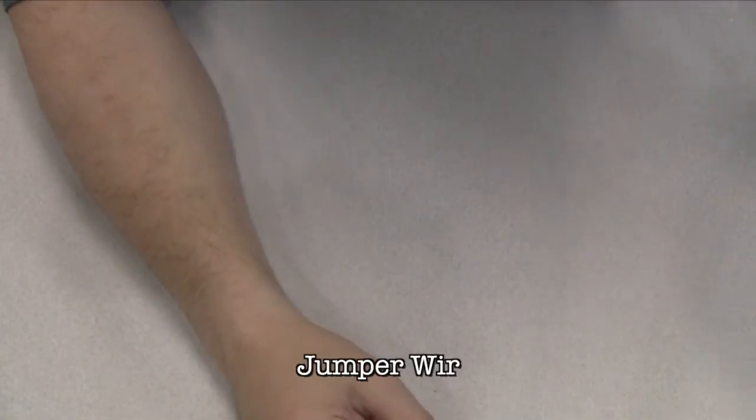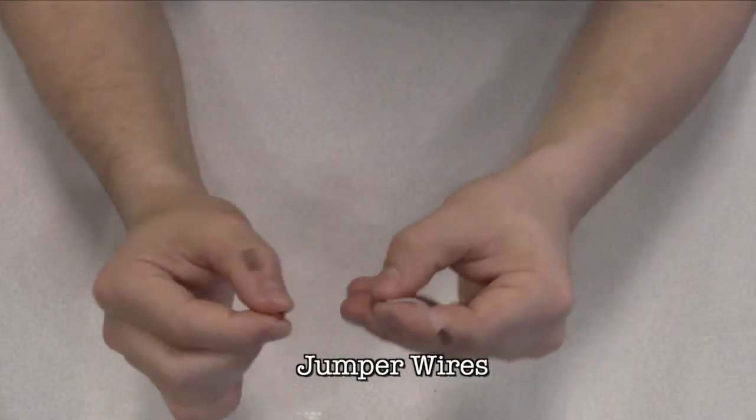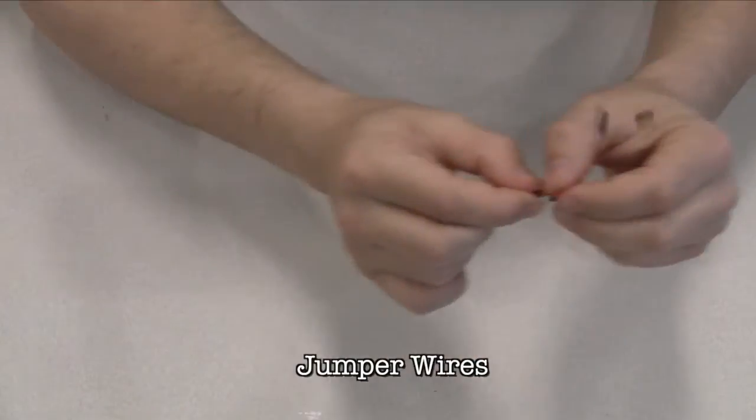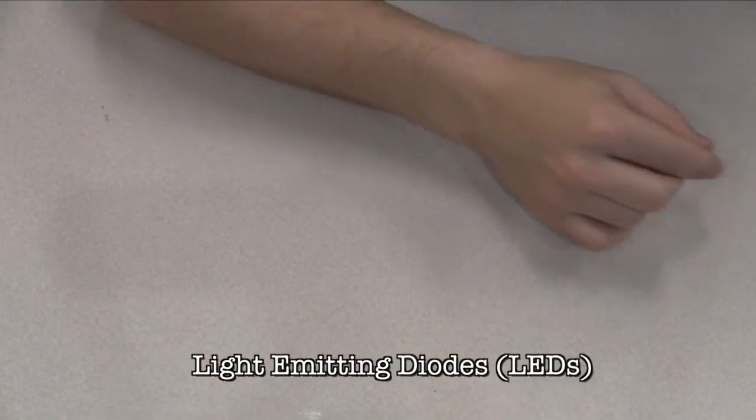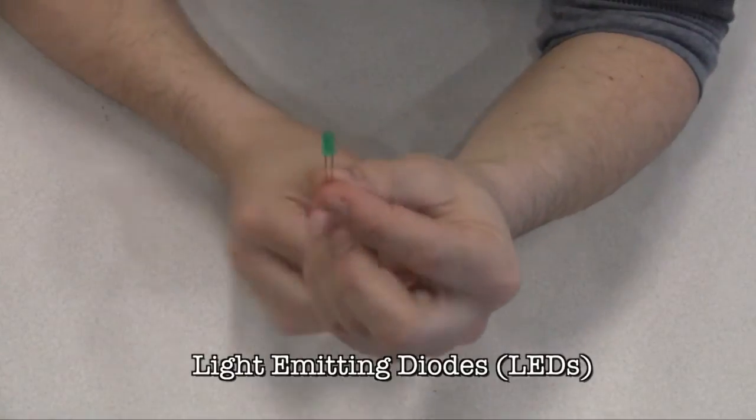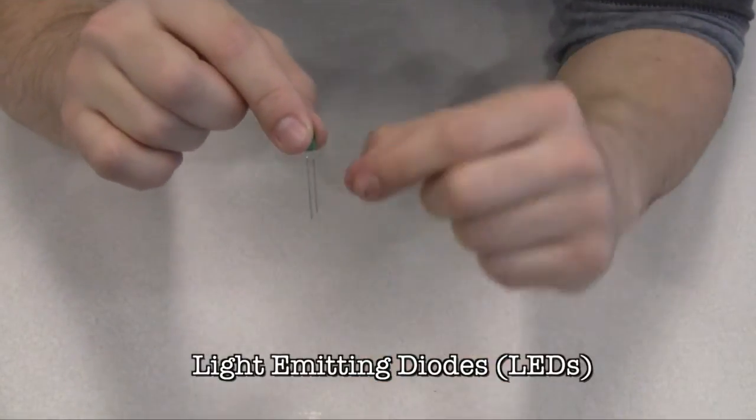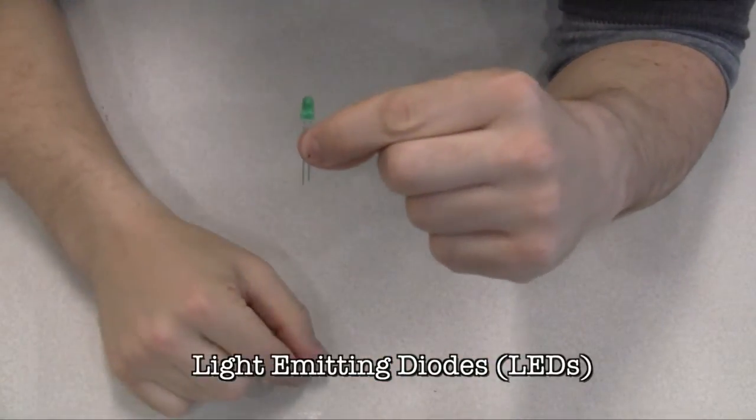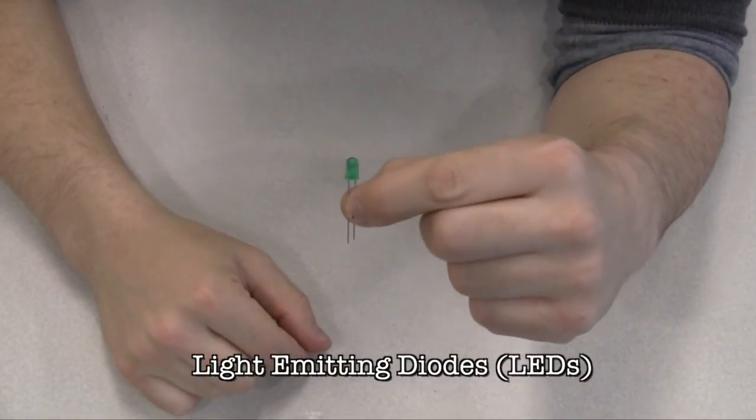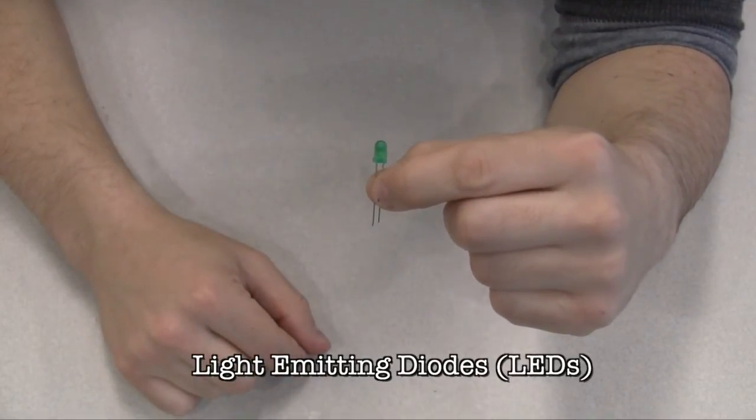Jumper wires are used to connect components to each other on the breadboard and the Arduino. Light-emitting diodes, or LEDs, are a type of diode that illuminates when electricity passes through it. Like all diodes, electricity only flows in one direction through these components. The anode, which typically connects to power, is usually the longer leg, and the cathode is the shorter leg.